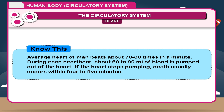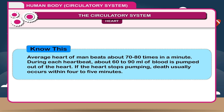The average heart of a man beats about 70 to 80 times per minute. During each heartbeat, about 60 to 90 ml of blood is pumped out of the heart. If the heart stops pumping, death usually occurs within 4 to 5 minutes.